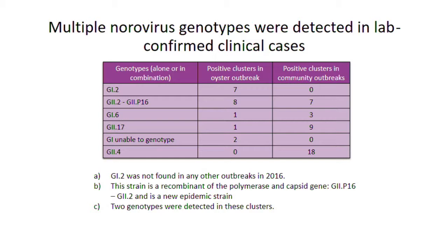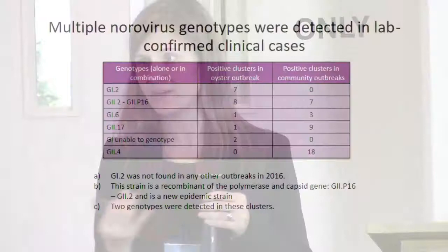G1s survive better in the environment than G2s. In marine waters, fresh water, and on foods, you're more likely to find G1s. G2s are strong pathogens that replicate at a high rate and are shed in large amounts in stool, but they're more environmentally labile. G1s are shed at lower amounts but survive well in the environment and appear in higher proportions in wastewater treatment plants. Crucially, G2.4 — our most common strain in BC — was never seen once in any of these oyster cases.